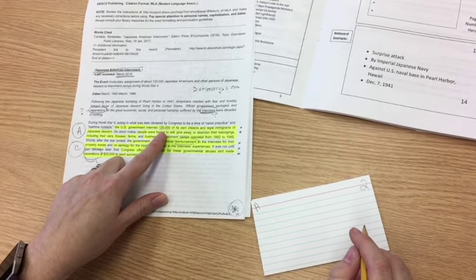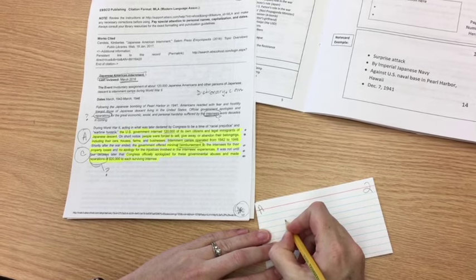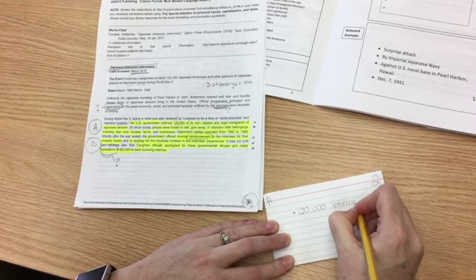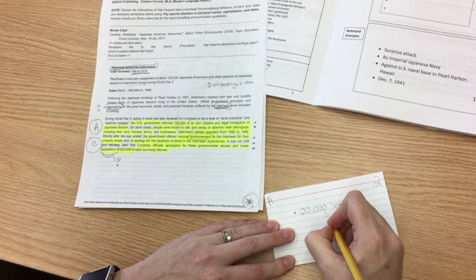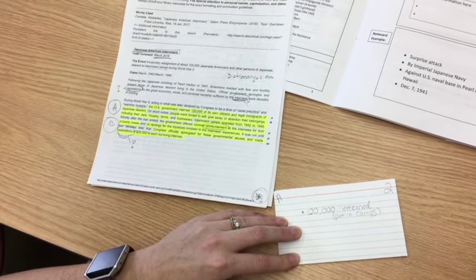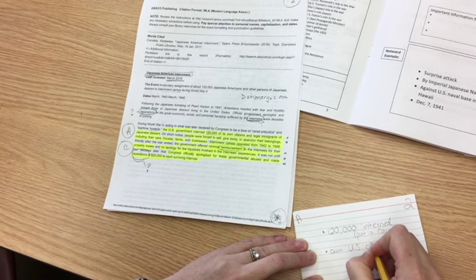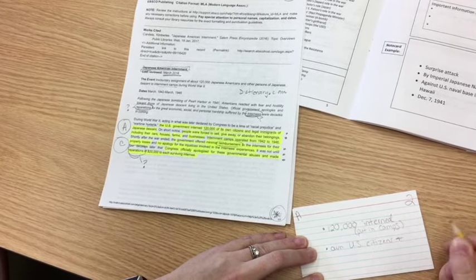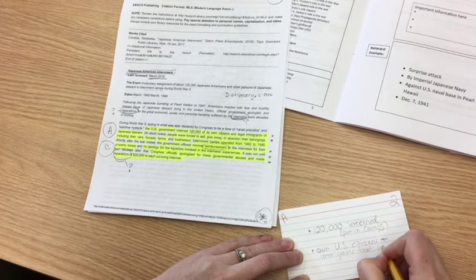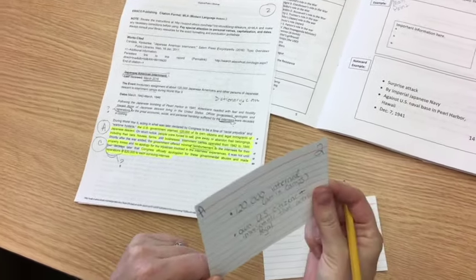It says the U.S. government interned 120,000 of its own citizens and legal immigrants of Japanese descent. So I'm going to make a bullet. We're all used to bulleting and we're going to say there were 120,000 interned. And I might put a note for myself there like put in camps. I figured that out from context clues in the article, Japanese internment camps. So they're putting them there. And it says that these were their own citizens. So these were their own U.S. citizens and immigrants that were legal. Notice I'm paraphrasing as I go. Not unless something looks absolutely amazing and I want a direct quote at word for word. Do I need to write it in direct quote? Look at that. That is one note card done.